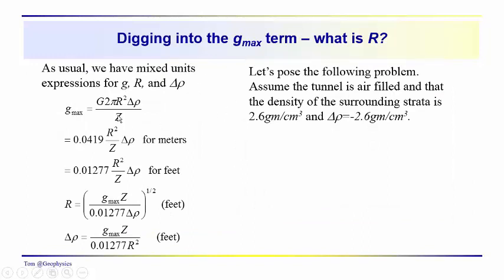So, now that we've figured out what the depth is, recall that we have these other forms of the expression. For G_max, it has the terms R squared, R, delta rho. We could solve for delta rho if we knew what R was for the typical subway, or we could estimate what the delta rho was. Is it water-filled? Is it air-filled? We also have these constants, which are set up to allow us to use mixed units. We have anomalies in milligals, we have R and Z in meters, and we have delta rho in grams per cubic centimeter. Here, we have R and Z in feet, and delta rho in grams per cubic centimeter with a different constant. So, in feet, we have these two expressions that we could solve for R and delta rho.